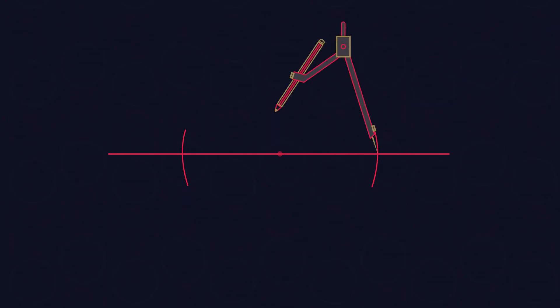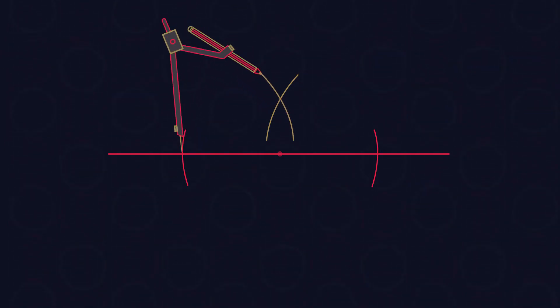Then put your compass on one of these arcs and draw a new arc above the line. And put your compass on the other arc and draw a new arc here too. Again, make sure your compass stays at the same width.